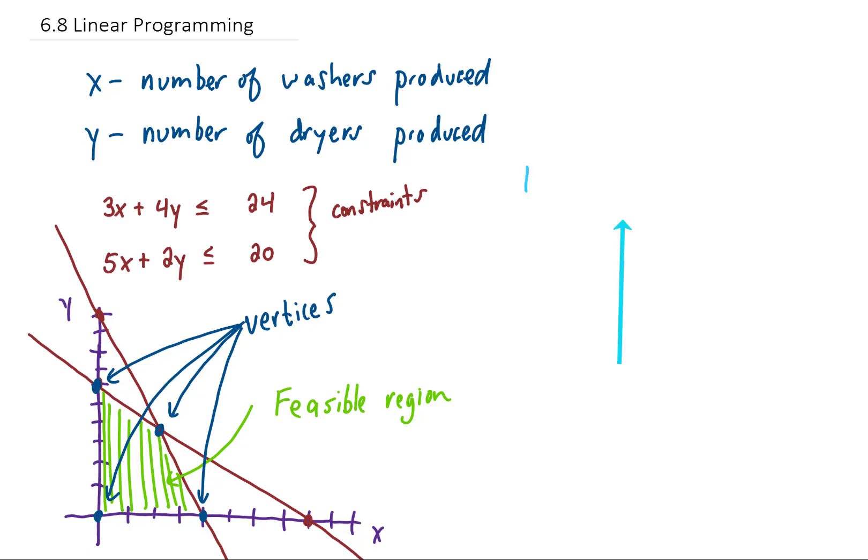A profit function might look something like this. This particular profit function says that for every washer we're going to produce we're going to make $4, and for every dryer that we're going to produce we're going to make $6. And we would like to maximize our profits. Now generally speaking, the function that we want to either maximize or minimize is called an objective function.